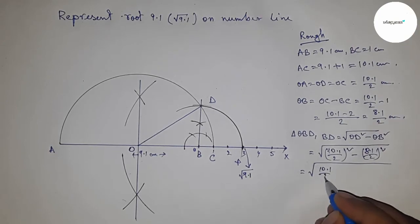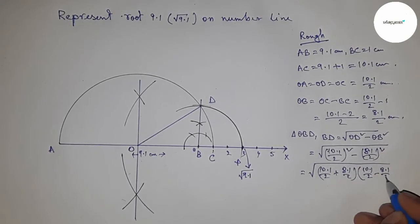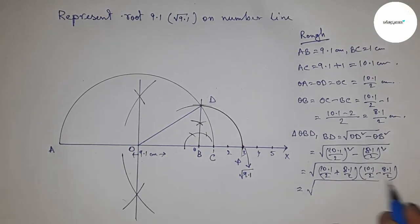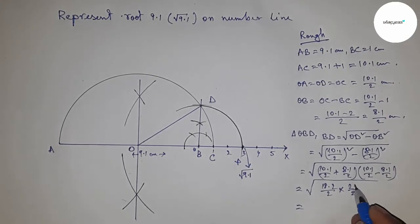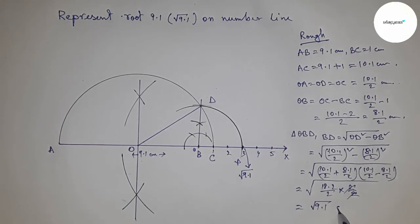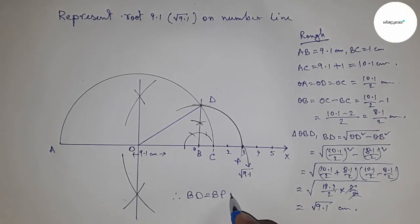Applying the formula here, we get (18.2/2) × (2/2), which equals 9.1. Therefore, BD = BP = √9.1 cm.